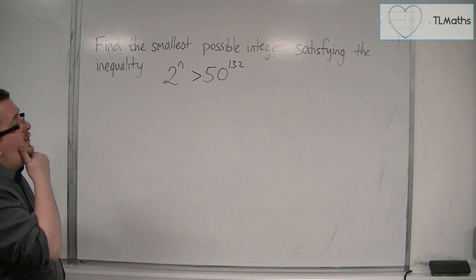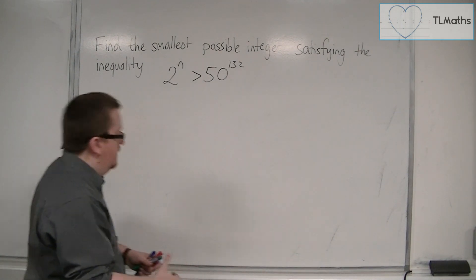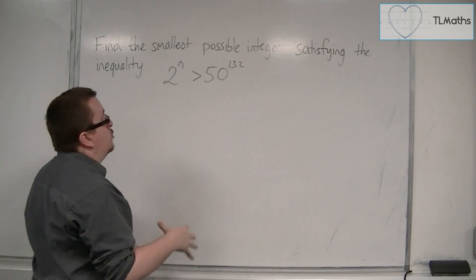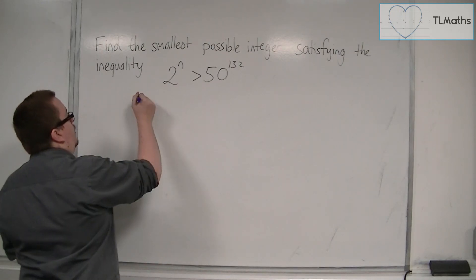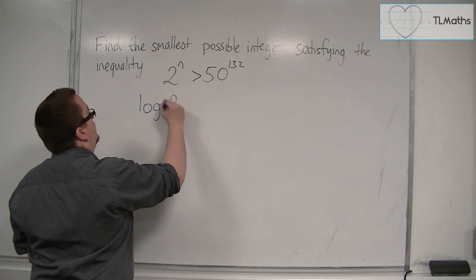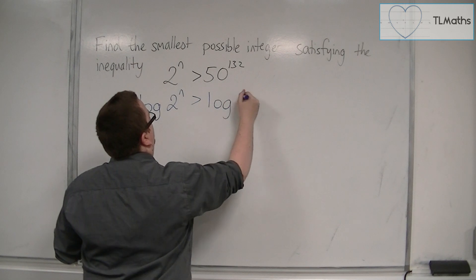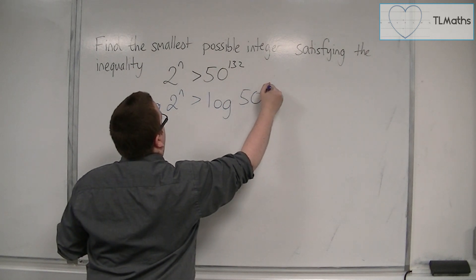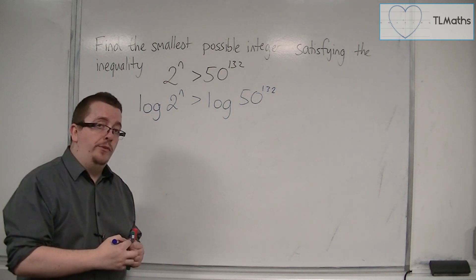We can use logarithms to simplify this problem. Taking logarithms of both sides: log(2^n) > log(50^132). When you take logarithms of both sides, the inequality still holds.